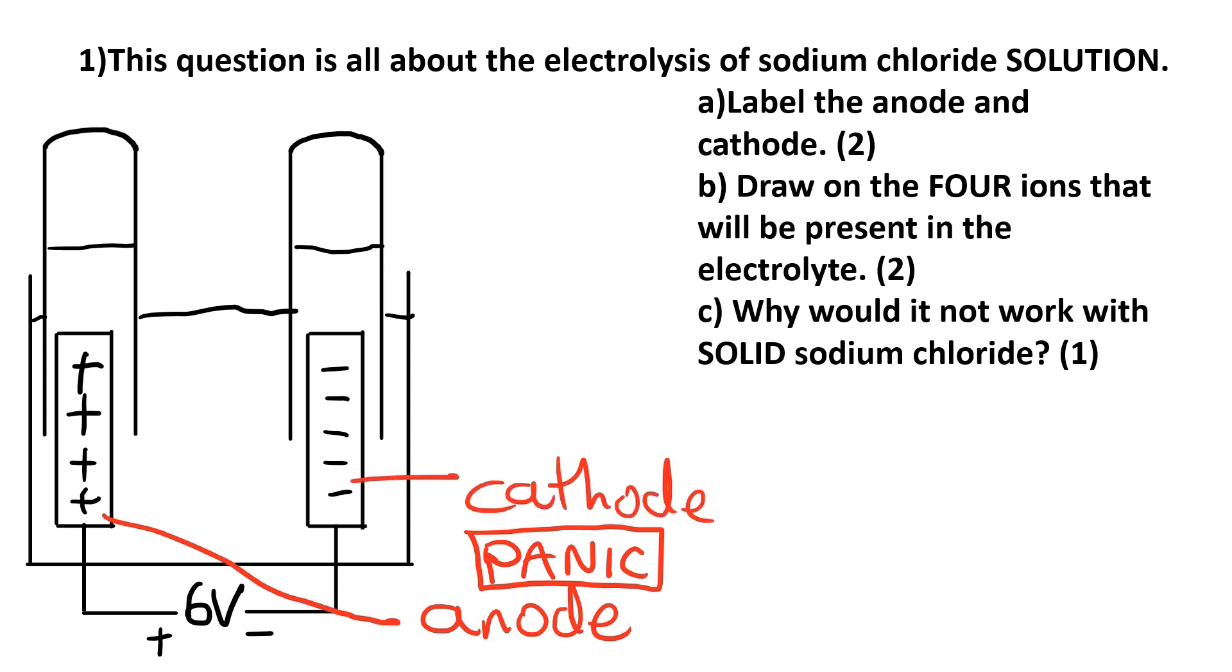For the four ions, it's sodium chloride solution: sodium ions are Na+ (it's a 1+ ion because sodium is in group 1), chloride ions are Cl- (it's a 1- because chlorine is in group 7), and we also need to remember that water dissociates or ionizes to form hydrogen ions H+ and hydroxide ions OH-.